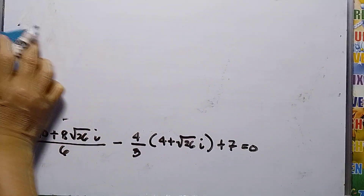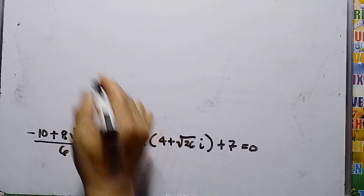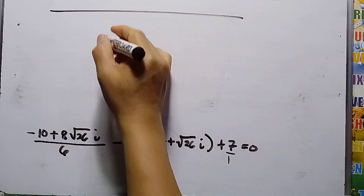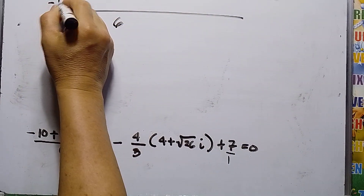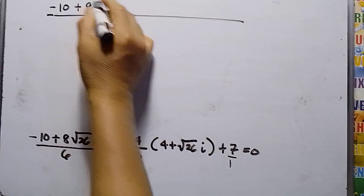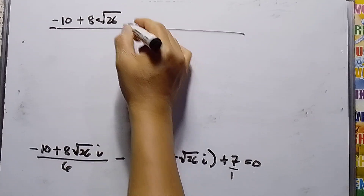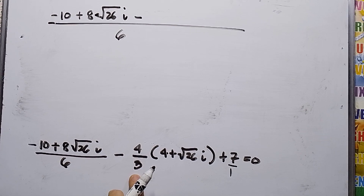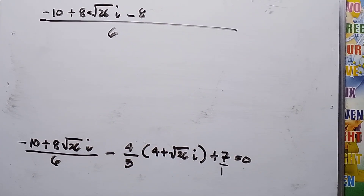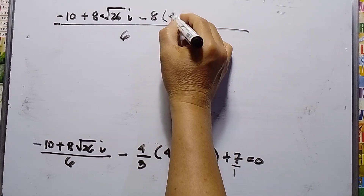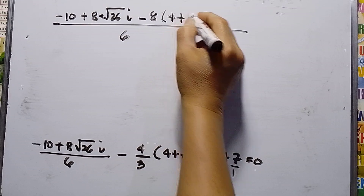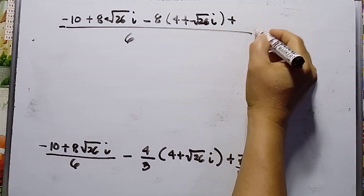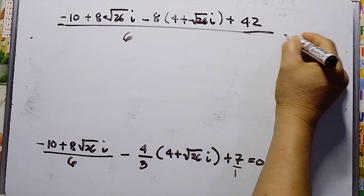Simplifying with LCD 6: 6 divided by 3 is 2, times 4 is 8. So the expression becomes, over 6: negative 10 plus 8 square root of 26 i, minus 8 times the quantity 4 plus square root of 26 i, plus 7 times 6 which is 42, all over 6, equals 0.